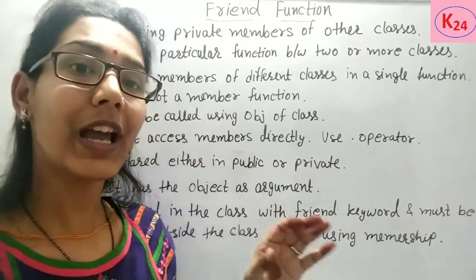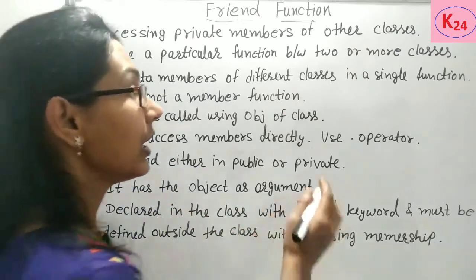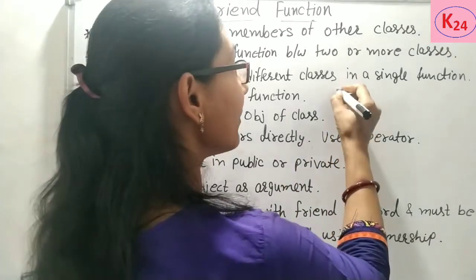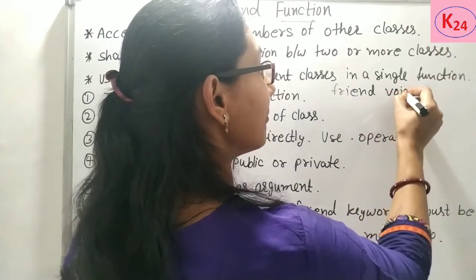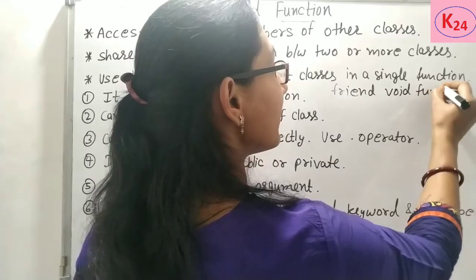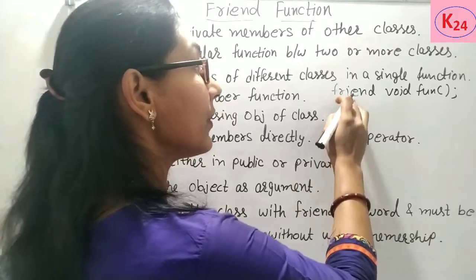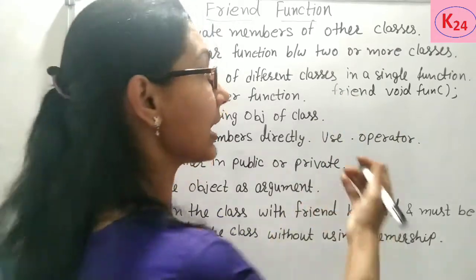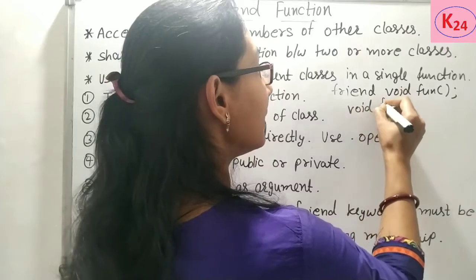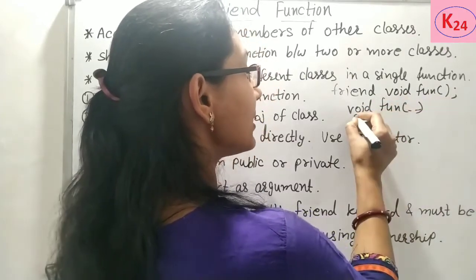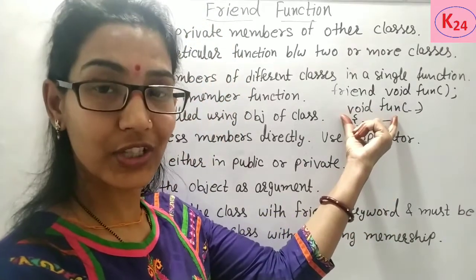In the function declaration inside the class, we write the 'friend' keyword followed by the function name — for example, 'friend void fun'. This is the function declaration. Then the function definition outside the class is written simply as 'void fun' with the arguments and body, without any scope resolution operator or class name. This is the friend function definition.